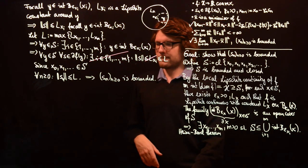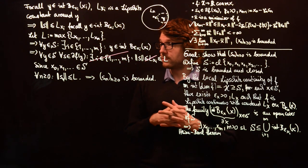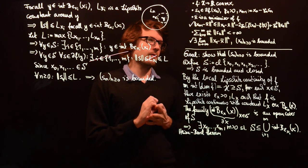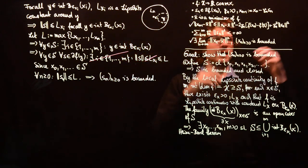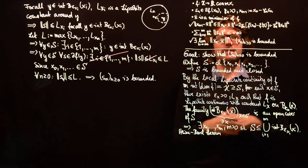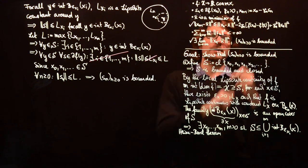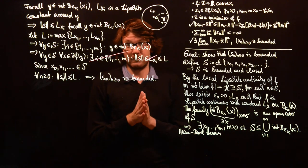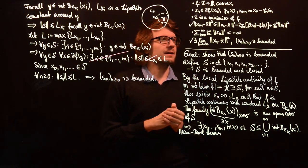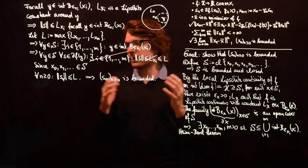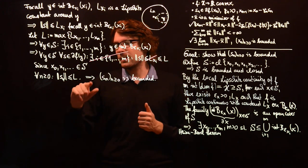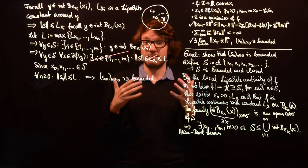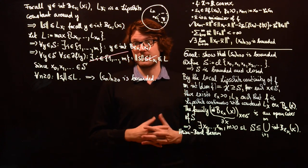This was what we wanted to show for now. The next step will be to further exploit the key inequality, including the function values, which will give us a lot more information and show us why the boundedness of the subgradients is relevant to the convergence analysis. See you next time.